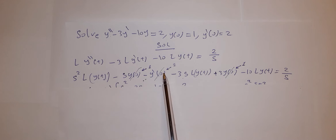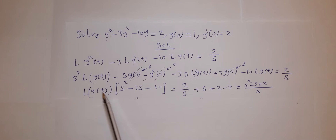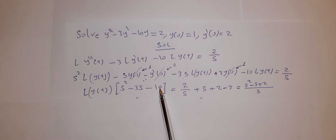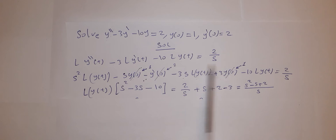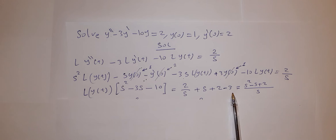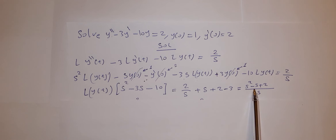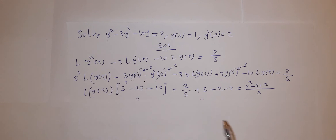After taking L{y(t)} as a common factor, we have L{y(t)} times (s squared minus 3s minus 10) equals 2 over s, then push the remaining numbers to the right hand side: 2 over s plus s minus 2 minus 3. Using s as a common denominator, we simplify this expression. Then divide by the bracket to isolate L{y(t)}.